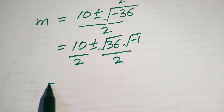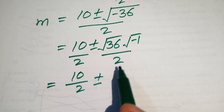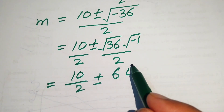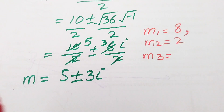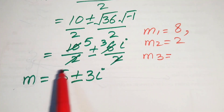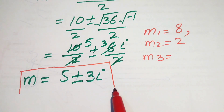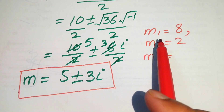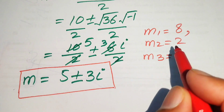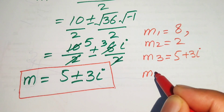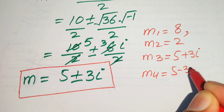Since √36 equals 6 and √(minus 1) equals i, we get m equals 5 ± 3i. So the two complex roots are m₃ equals 5 plus 3i and m₄ equals 5 minus 3i. The four roots of the equation are m₁ equals 8, m₂ equals 2, m₃ equals 5 plus 3i, and m₄ equals 5 minus 3i.